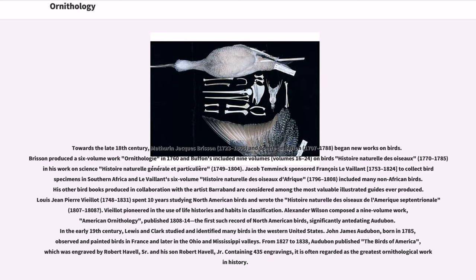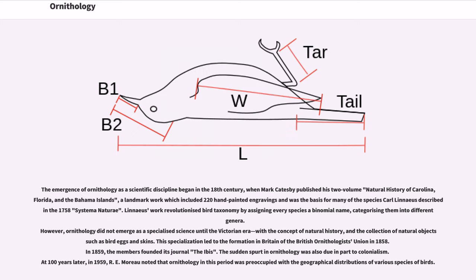Alexander Wilson composed a nine-volume work, American Ornithology, published 1808–1814, the first such record of North American birds, significantly antedating Audubon. In the early 19th century, Lewis and Clark studied and identified many birds in the western United States. John James Audubon, born in 1785, observed and painted birds in France and later in the Ohio and Mississippi valleys. From 1827 to 1838, Audubon published The Birds of America, engraved by Robert Havell Sr. and his son Robert Havell Jr., containing 435 engravings. It is often regarded as the greatest ornithological work in history.